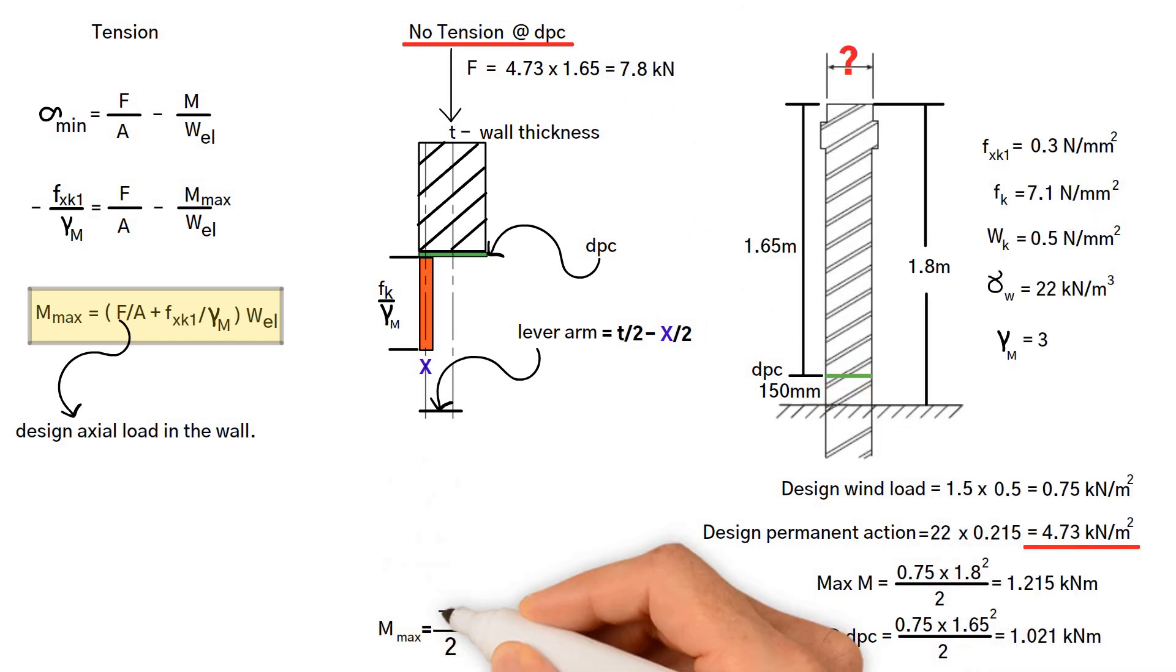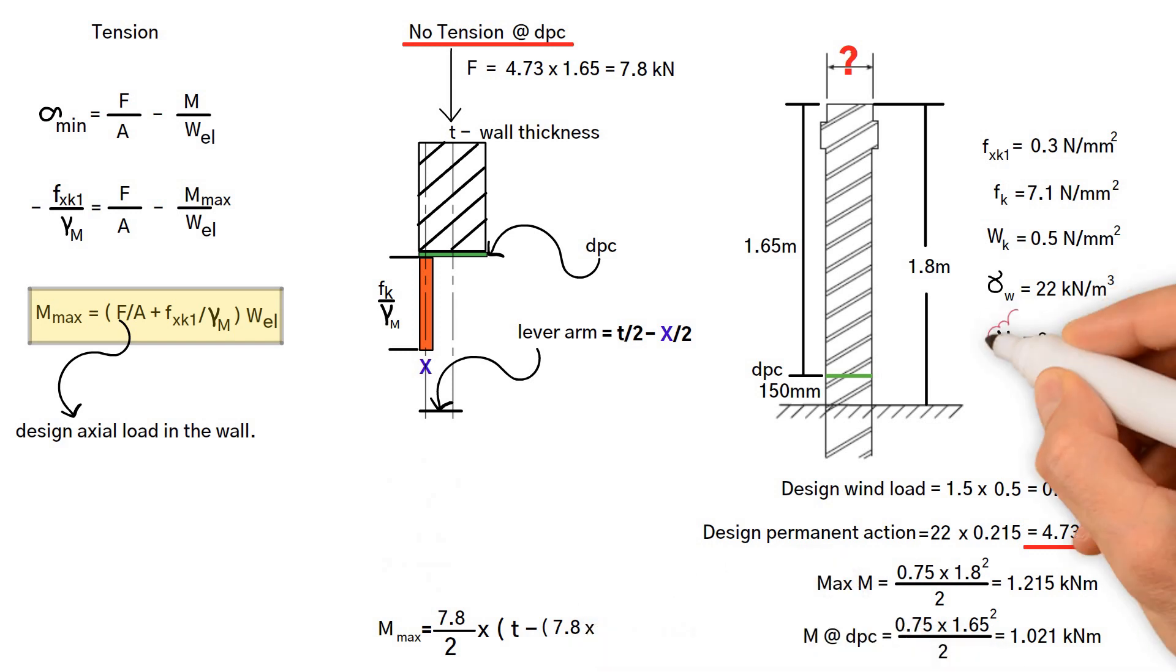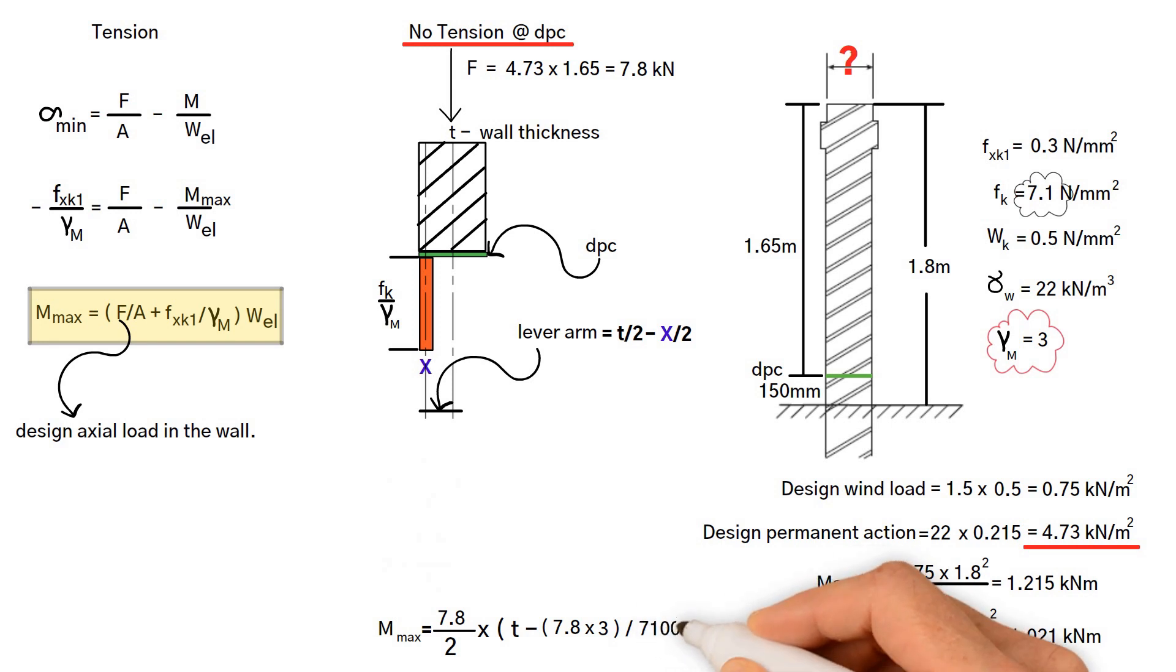As a result, maximum moment equals wall self-weight divided by 2 multiplied by wall thickness minus open bracket wall self-weight times the partial safety factor close bracket divided by characteristic compressive strength 7.1, which should be converted to kN/m² by multiplying 7.1 by 1,000, which equals 7,100.